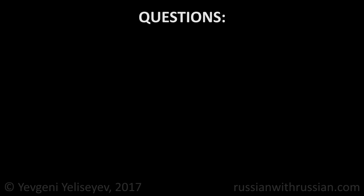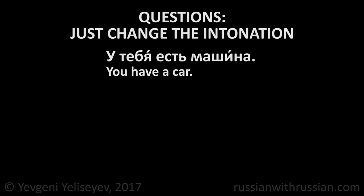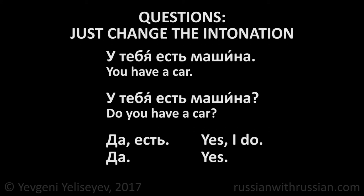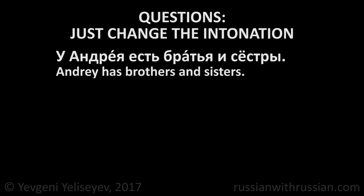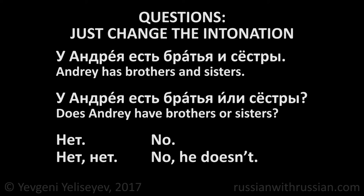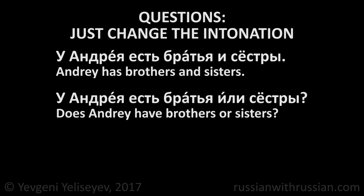To ask a question, it's enough to change the intonation. Compare, please: у тебя есть машина — you have a car; у тебя есть машина? — do you have a car? The answer can be: да, есть — yes, I do; or simply да — yes; or есть — I do. У Андрея есть братья и сёстры — Andrey has brothers and sisters. У Андрея есть братья или сёстры? — Does Andrey have brothers or sisters? The negative answer is нет — no, he doesn't. In colloquial speech you can also hear нету, but these forms are not used in literary speech.